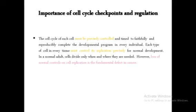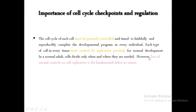The cell cycle of each cell must be precisely controlled and timed to faithfully complete the developmental program. Each type of cell in every tissue must control its replication precisely for normal development. In a normal adult, cells divide only when and where they are needed. However, loss of normal controls on cell replication is the fundamental defect in cancer.